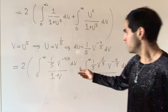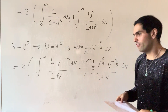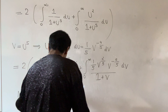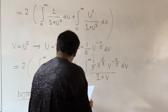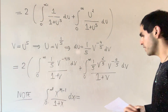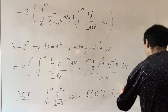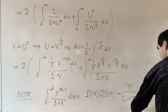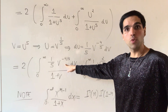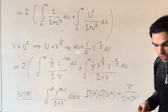Now we have a power of v over one plus v, and we'd like to use a fact from gamma functions. Using the beta function, in general the integral from zero to infinity of x to the m minus one over one plus x dx equals gamma(m) times gamma(1 minus m), which equals pi over sine of pi m. This is useful here for m equals one-fifth and m equals three-fifths, giving us the following result.